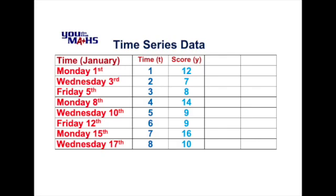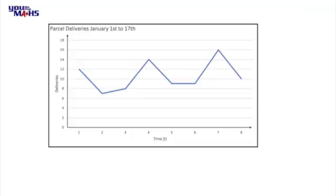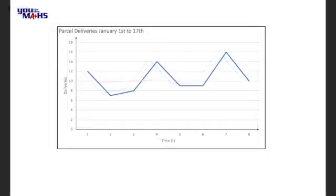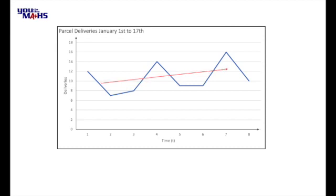Talking about predictions, let's have a look at the data in graphical form so we can get a sense of what it might look like if we wanted to look at values for parcel deliveries for days after January the 17th. We can see here we've got a pattern — the data starts from a high value, then for the next two days of the week, Wednesday and Friday, the number of sales drops, then it increases again to the Monday of the second week, and the same pattern repeats in the third week as well. We also see a trend — the trend appears to be a gradual increase in the data, so from left to right the graph appears to be overall slowly moving in a positive or upwards direction. It would be nice if we could smooth that data out so it would be easy to see that overall trend.